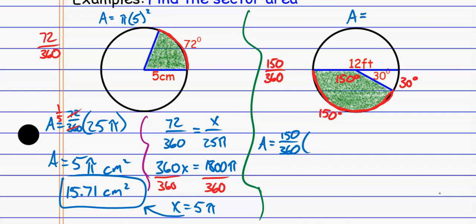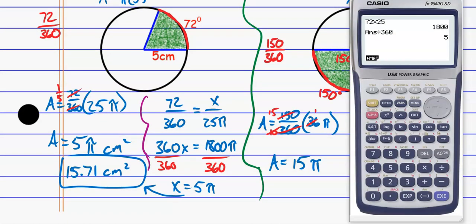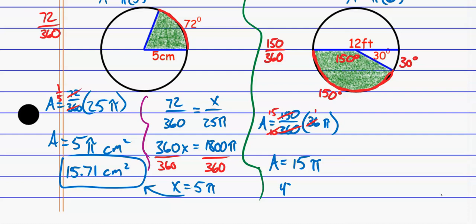I want a fraction of the entire area. The area this time is πr², and be careful — the r value is not given directly. The radius is 6 because the diameter is 12. So the entire area is 36π. I can start reducing: 36 and 360 reduce to 1 and 10, and 150 and 10 reduce to 15 over 1. The area is 15π square feet.